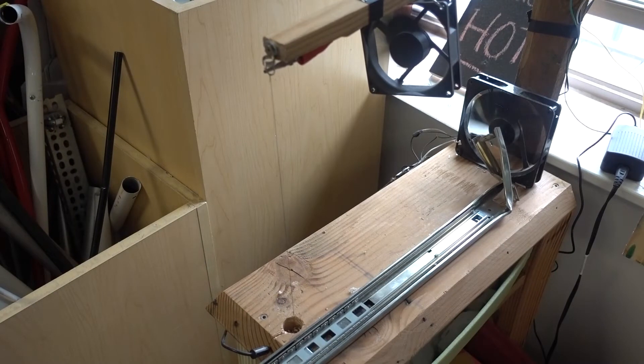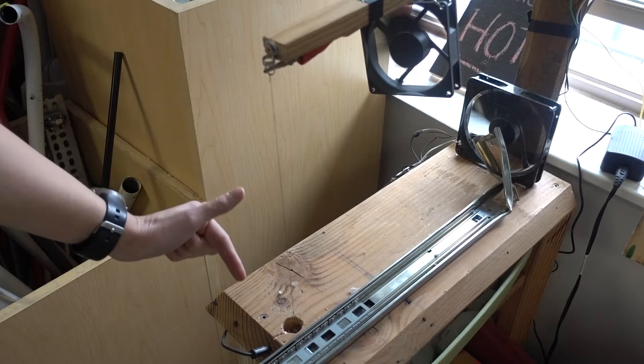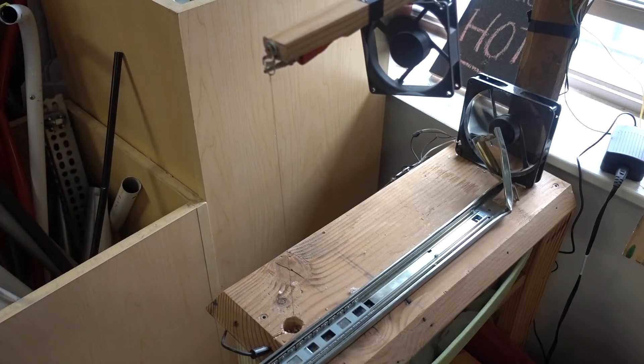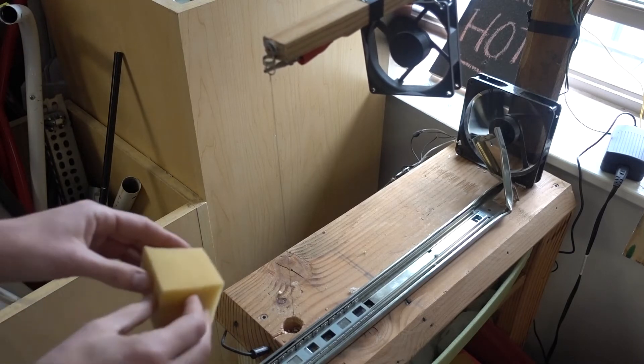We can tell the power is on now because the fans are running which also means that electrical current is passing through the nichrome wire and because of its resistive properties is now incredibly hot. Hot enough, in fact, to slice through most types of foam.